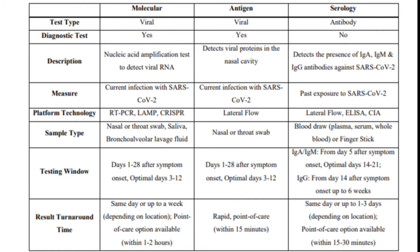The testing window for the antibody test: a positive IgA or IgM can be detected from day 5 after symptom onset, with optimal days between 14 to 21. IgG usually becomes positive after day 14 of symptoms and can remain positive for up to 6 weeks. The test turnaround time is usually the same day, but can take 1 to 3 days depending on testing capabilities. There is also a point-of-care option where results come within 15 to 30 minutes.